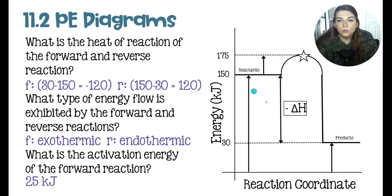For the forward reaction, we're reading it from left to right. So we would do these products at 30 minus the reactants at 150, giving us a negative 120 for the forward. This energy flow is going to be exothermic. The reaction is losing energy over the course of the reaction. Energy has been lost. We have that negative delta H heat is exiting this reaction.